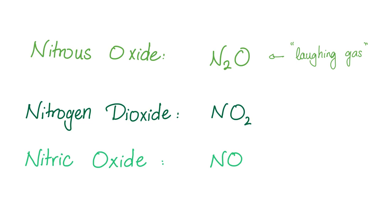There is a difference between nitrous oxide, nitrogen dioxide, and nitric oxide. Nitrous oxide is N₂O — the laughing gas, the anesthetic and analgesic. Nitrogen dioxide is NO₂. Nitric oxide is NO — the famous vasodilator. This is Viagra, this is sublingual nitroglycerin. That's why you don't take them together — they will dilate your vessels to the point of severe hypotension, and if the hypotension doesn't kill you, the reflex tachycardia will.